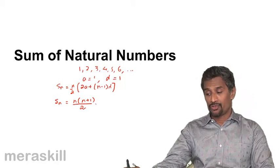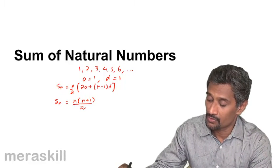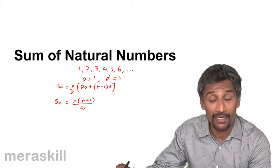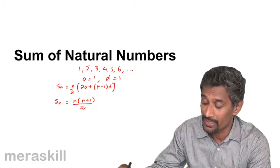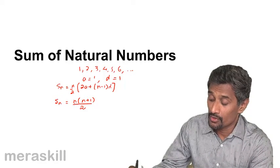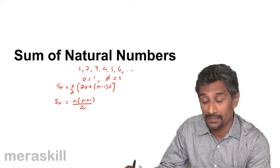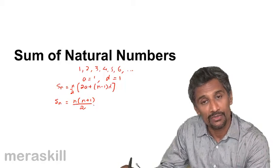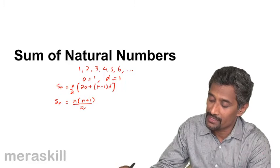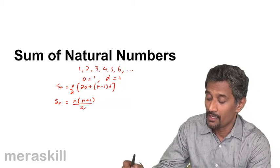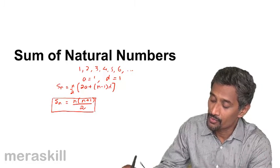So if you take n natural numbers — say for example 1, 2, 3, 4, 5, 6 — if you add all of them you get 6+5=11, +4=15, +3=18, +3=21. Substituting the formula you get 6×(6+1) = 6×7 = 42/2 = 21. So substituting a=1 and d=1, we have n(n+1)/2.